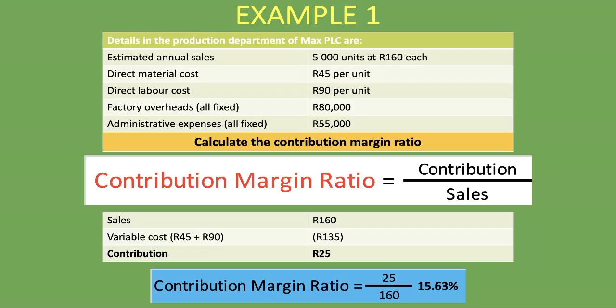That means after making the sales and accounting for variable costs, you have 15.63% remaining to cover your fixed expenses before arriving at your profit. This 15.63% may not be enough to cover your fixed costs, which is why break-even analysis would be a better tool to gauge what you need to sell to break even or make a profit.